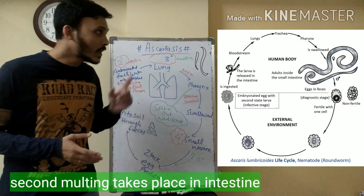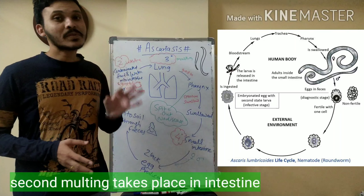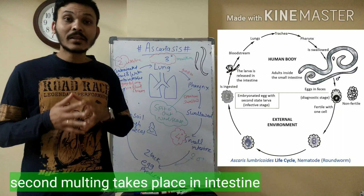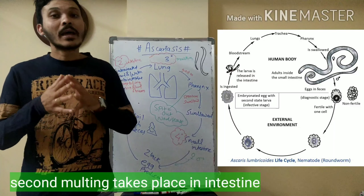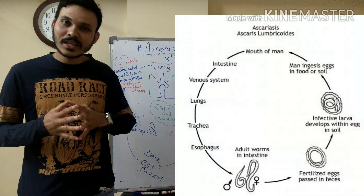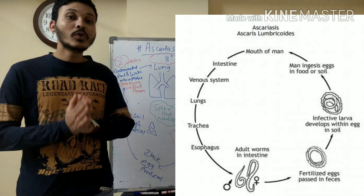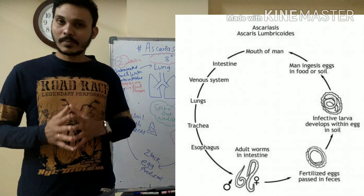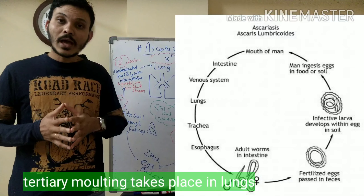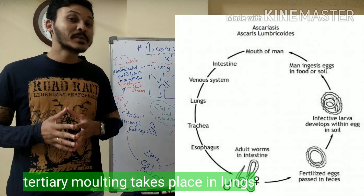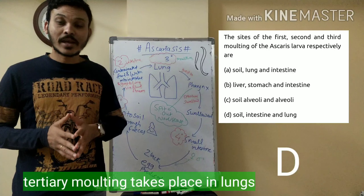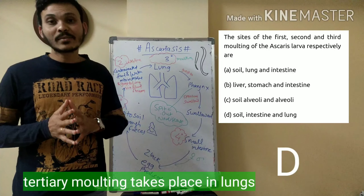In the intestine, there is the first molting. In the second stage, it is converted — going through the hepatic portal vein, through the liver, then to the heart, and then to the lungs. The primary molting takes place in the soil, the secondary molting takes place in the intestine, and the third molting takes place in the liver.